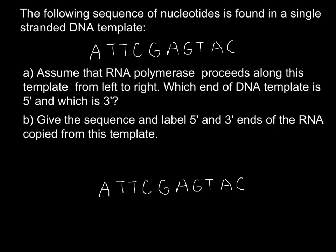RNA always grows from the 5' end to the 3' end — this is the rule. Since RNA grows from left to right, we can label the RNA 5' end on the left and 3' end on the right. This also tells us that the left side of the DNA template is the 3' end and the right side is the 5' end.